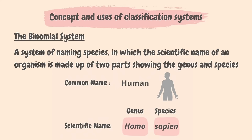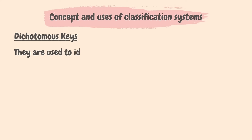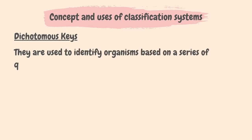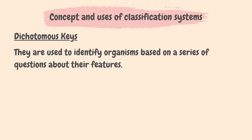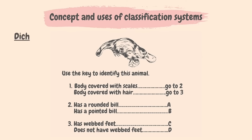Let's learn about dichotomous keys. Dichotomous keys are used to identify organisms based on a series of questions about their features. Dichotomous means branching into two, and it helps you identify the name of an organism by giving two descriptions at a time and asking you to choose. Each choice leads you on to another two descriptions until you end up with the name of the organism. Let's look at an example from a past paper where we must choose the correct answer by navigating through the dichotomous key.